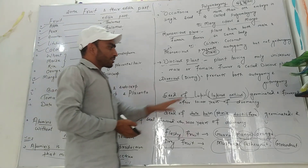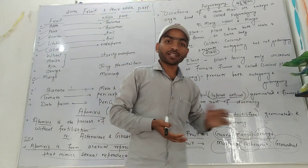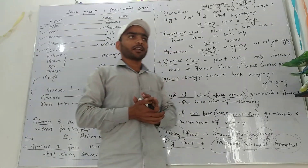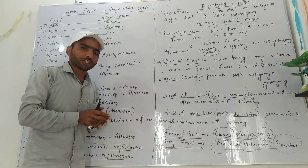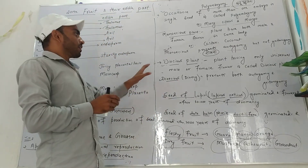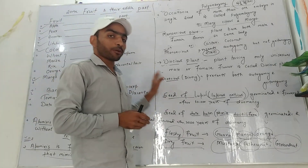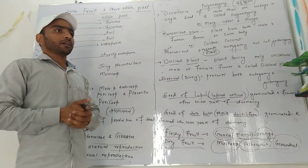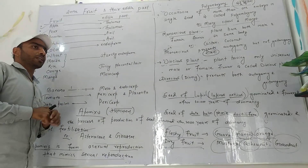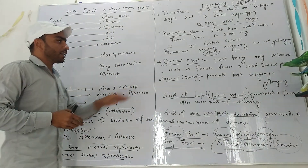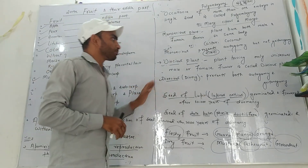Today's last topic is Class 12 Biology, second chapter — Reproduction: Sexual Reproduction in Flowering Plants. This is the last topic in this part. Let's go to the deck.